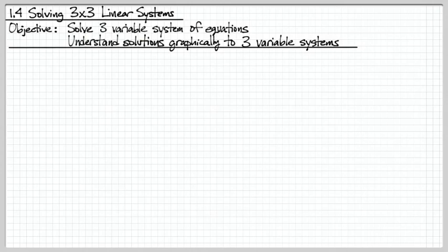When I'm talking about 2 by 2 linear systems, I mean two equations, two variables. So today, we're going to learn how to solve 3 by 3s, which are three equations, three variables.